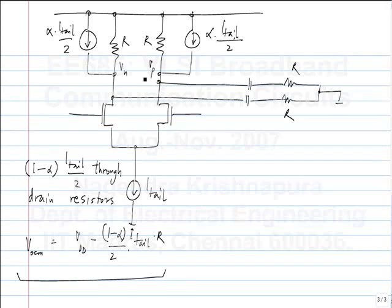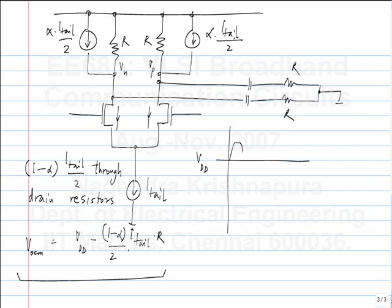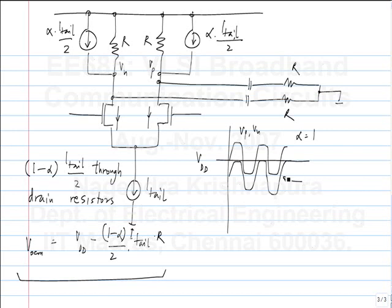If alpha equals 1, the swing will not be zero. In the quiescent condition I_tail/2 flows on each side, so quiescent current through R is zero. But when I_tail switches completely to one side, current does flow through R. The common mode will be Vdd and the output will swing above and below Vdd. If alpha is half, the maximum value will be Vdd — it rises up to Vdd on one side and Vn does the opposite.